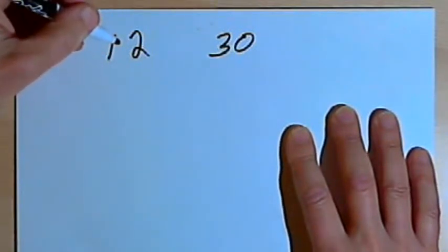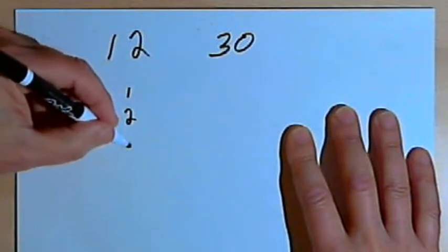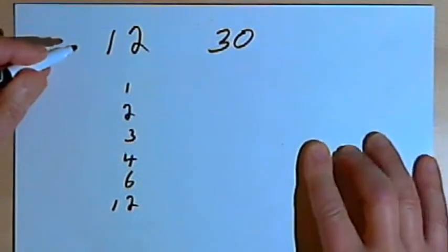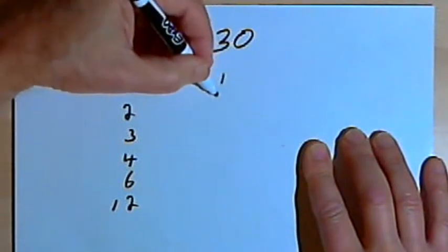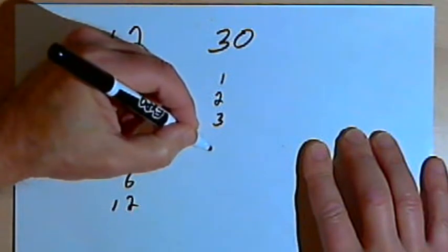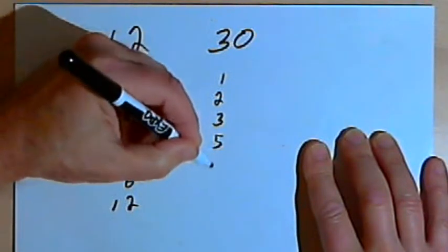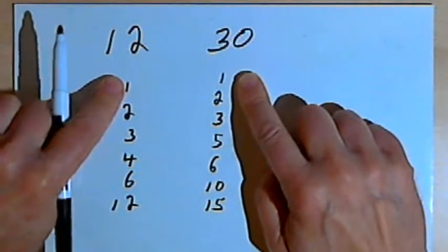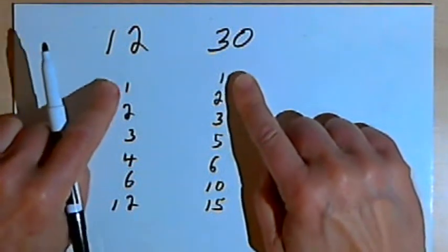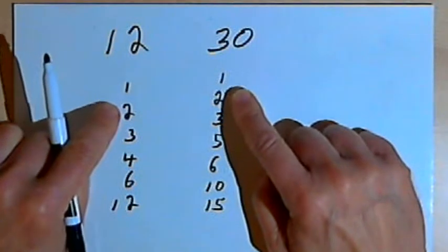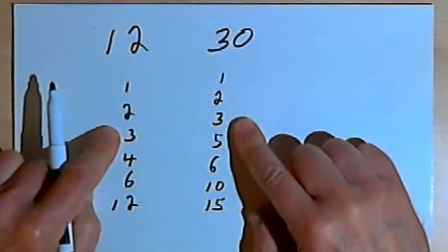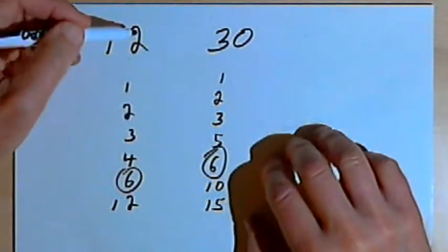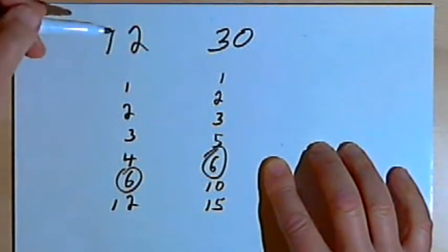The numbers I can divide evenly into 12 would be 1, 2, 3, 4, 6, and 12. The numbers I can divide evenly into 30 would be 1, 2, 3, 5, 6, 10, and 15. Comparing the two lists, I see 1, 2, 3, and 6 appear in both. And 6 is the largest number in both lists, so it's the greatest common divisor, or the greatest common factor.